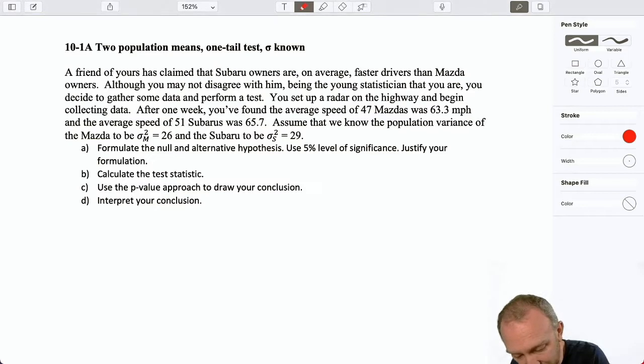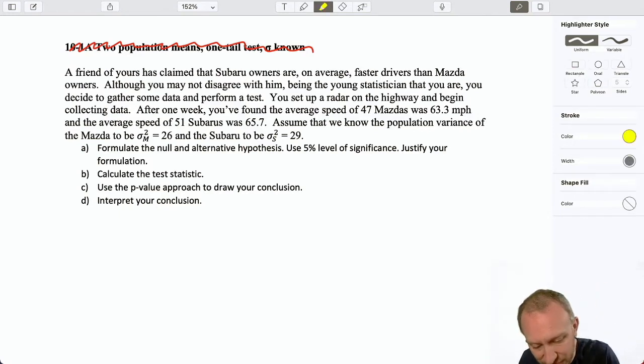Let's erase this and make sure that we can identify what kind of problem it is just by reading the problem itself, because probably our teachers won't tell us what it is that we're going to have to do. A friend of yours has claimed that Subaru owners are on average faster drivers than Mazda owners. Although you may not disagree with him, being the young statistician that you are, you decide to gather some data and perform a test. So that's telling us the type of test. This claim is that Subaru owners are faster than Mazda owners, and this is what we're going to be testing.